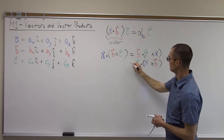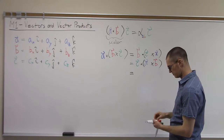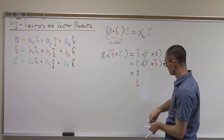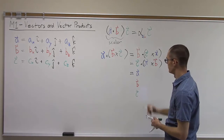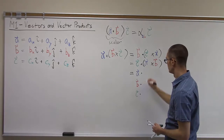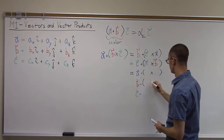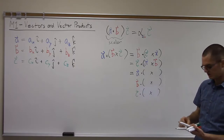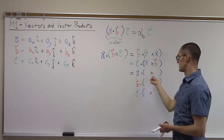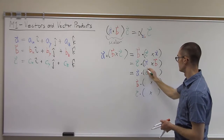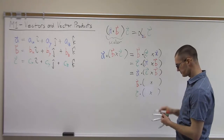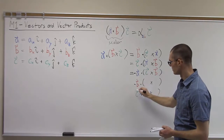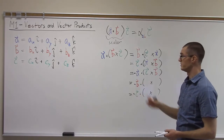If I change the order of any of those vectors — for example, if I keep a first but flip the second two vectors and say a·(c×b) instead — that will be the negative of the original. So reversing the cyclic order of the vectors gives the negative result.